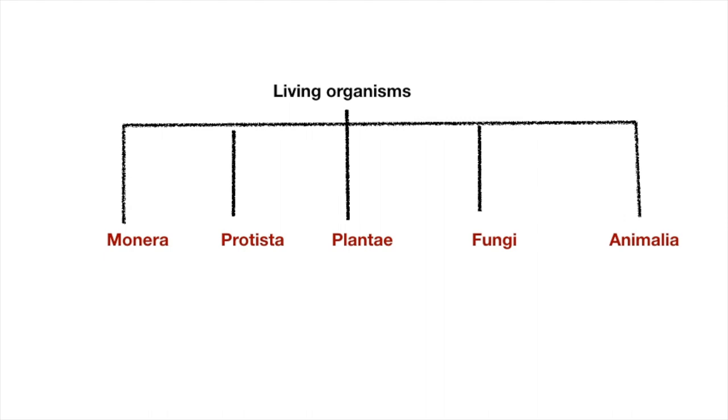As we have already studied, living organisms have been divided into five kingdoms: kingdom Monera, kingdom Protista, kingdom Plantae, kingdom Fungi, and kingdom Animalia. This classification of living organisms into five kingdoms was given by American scientist W.H. Whittaker in 1969. There are three basic criteria for this classification.